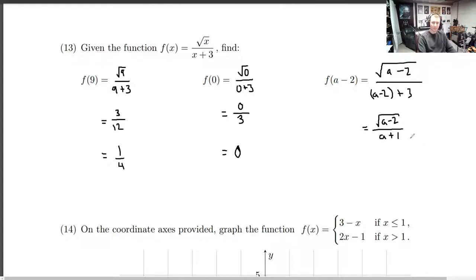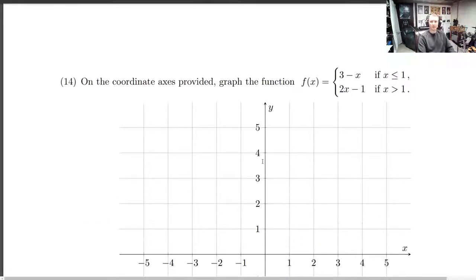Does this simplify anymore? I'm going to go ahead and say no. This would be sufficient. You could try and do stuff to this, but the denominator is already rationalized. So that's it. We've evaluated these two and we've simplified this one down as much as we can. Let's go on to the next problem, and then I'll do a new video.